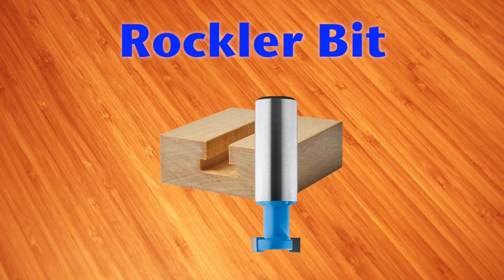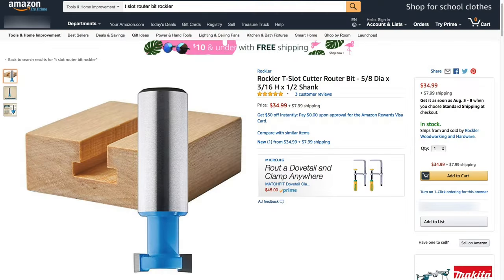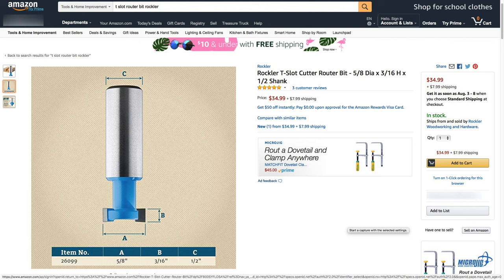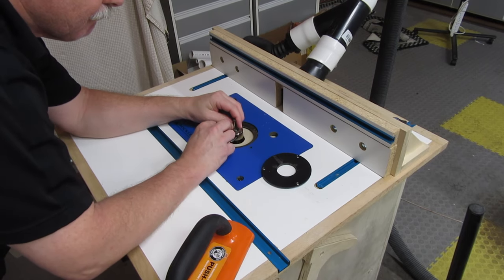Here's the other T-slot bit I have, and it's from Rockler. It's significantly more expensive than the Yanico bit. This bit only cuts the slot, so you have to cut the dado separately. You cut a dado three-eighths of an inch wide, and about three-eighths of an inch deep. So obviously, I'm using a three-eighths inch bit.